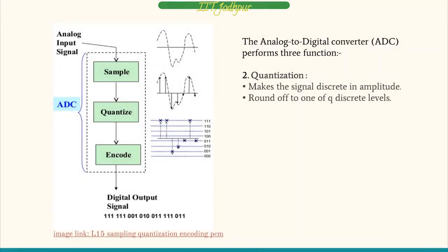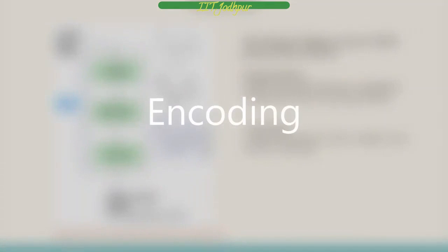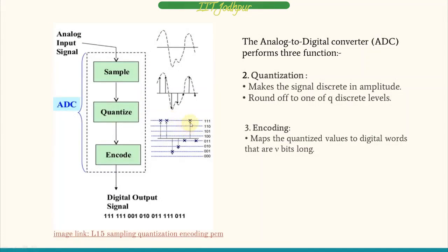From sampling, we move on to quantization. Quantization makes the signal discrete in amplitude — it rounds off the signal value into particular discrete levels set according to the number of bits we have. The next step is encoding, which means after quantizing and assigning a level, we convert that signal into digital output. For example, a signal pointing to around 111 — that conversion to 111 is known as encoding.